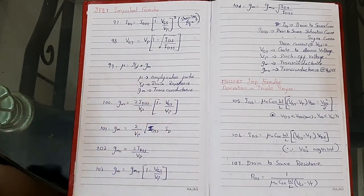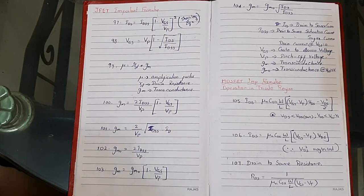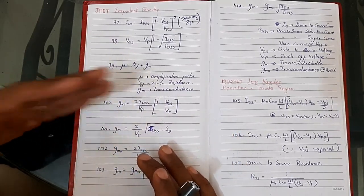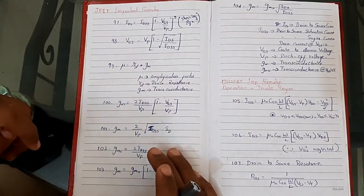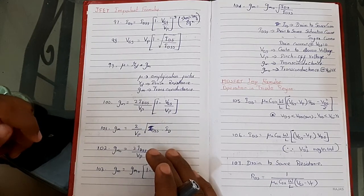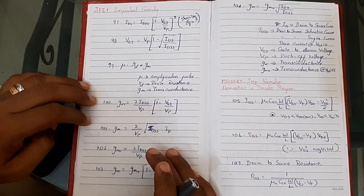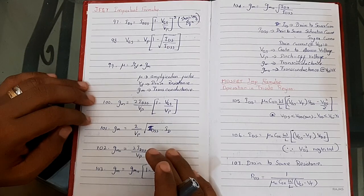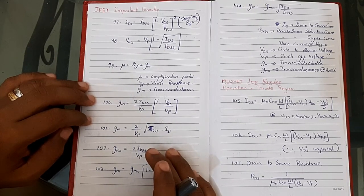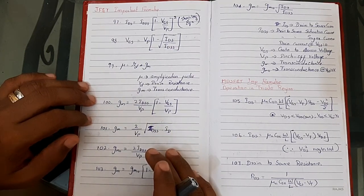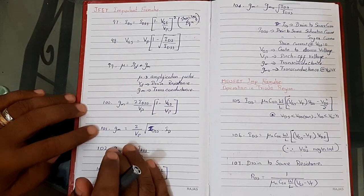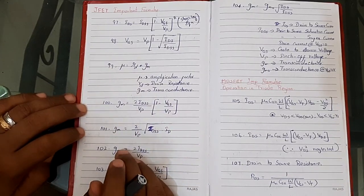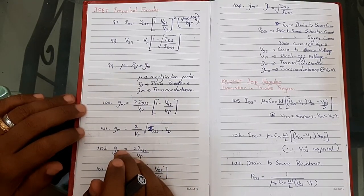These are the important formulas for JFET. We have more formulas on MOSFET as well. Around 455 formulas are discussed across the series. In this video I am closing with 100 formulas. I hope this video will be highly useful for your competitive exam preparation. Stay safe, stay at home. In the next video we will discuss formula numbers 101 to 150. Don't forget to subscribe to my channel Easy Lecture — thank you, bye.